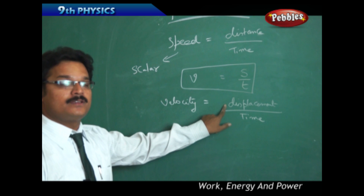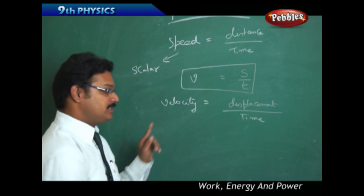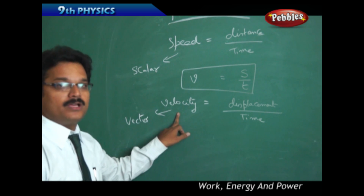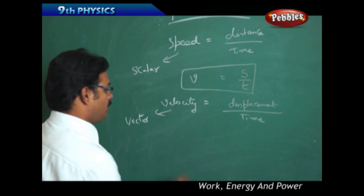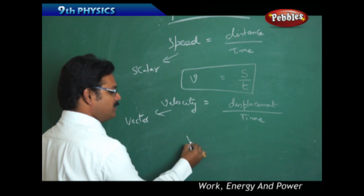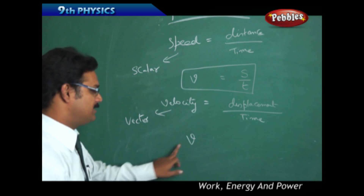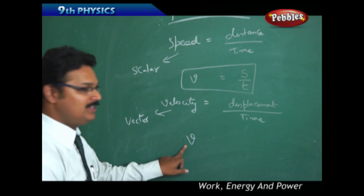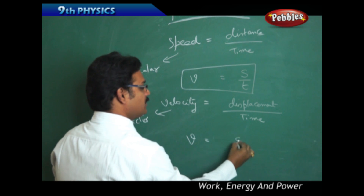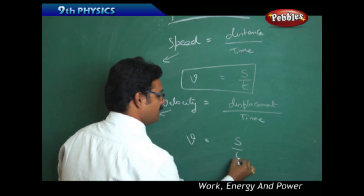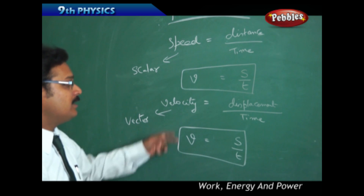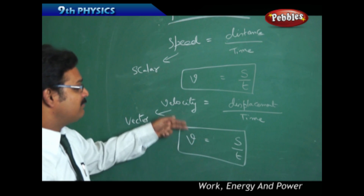Coming to velocity — velocity is defined as displacement by time. Displacement is a vector quantity, so velocity is also a vector quantity. That means you should tell both magnitude and direction. Velocity's first letter is also V, so I am using the same symbol. The formula is again V equals S by T — the same formula works for both speed and velocity.